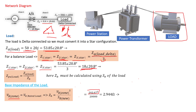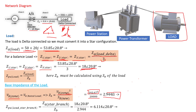We square V_B zone as per the formula, divided by S_B new — our S base — and we find a Z base value of 2.944 ohm. That is the base impedance of the load. We now have the Z actual for each branch of the star and the Z base of the load, so we can go ahead and calculate Z per unit of the load for each star-connected phase.